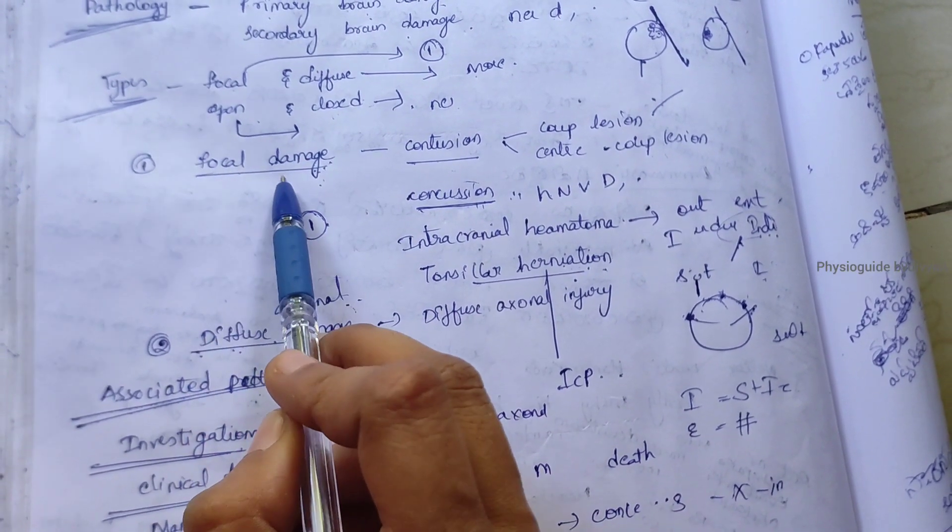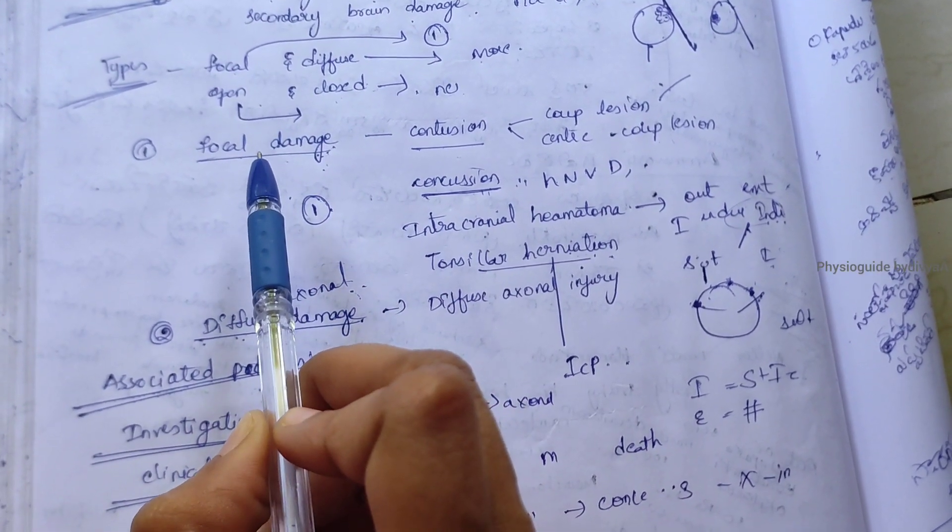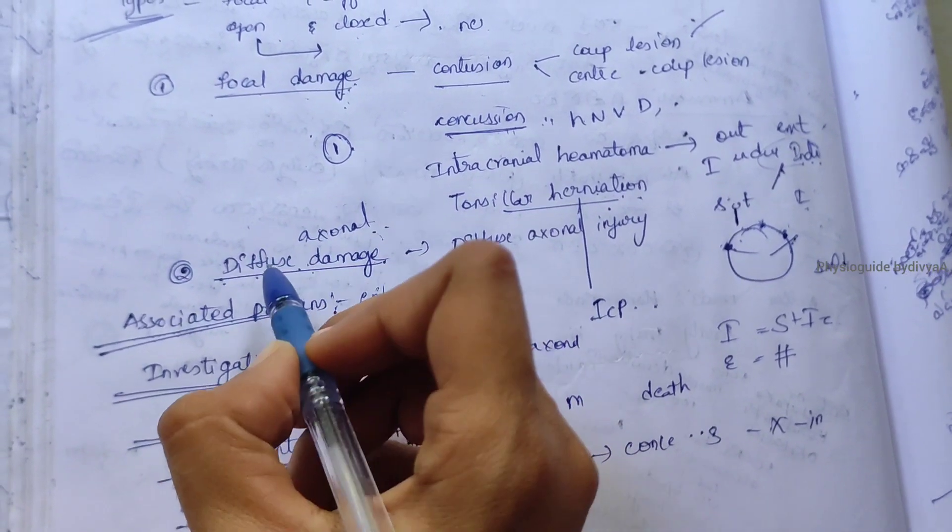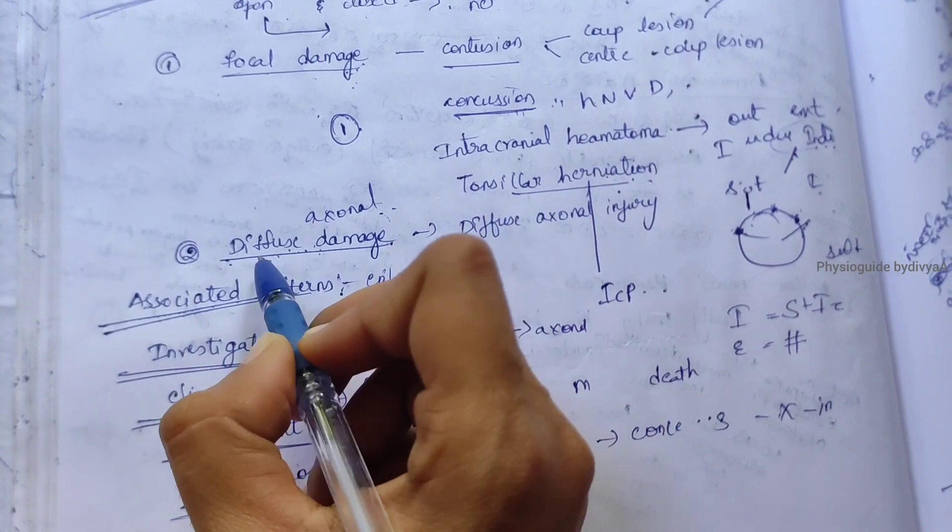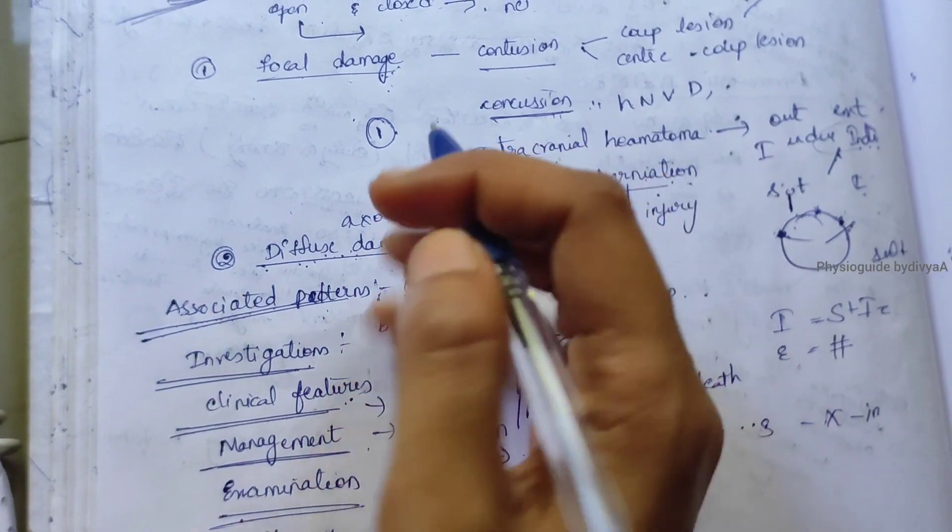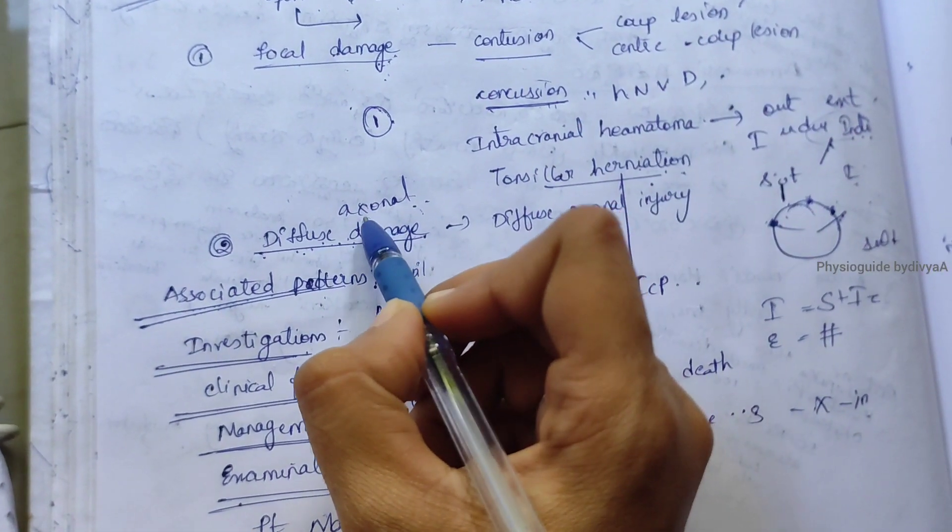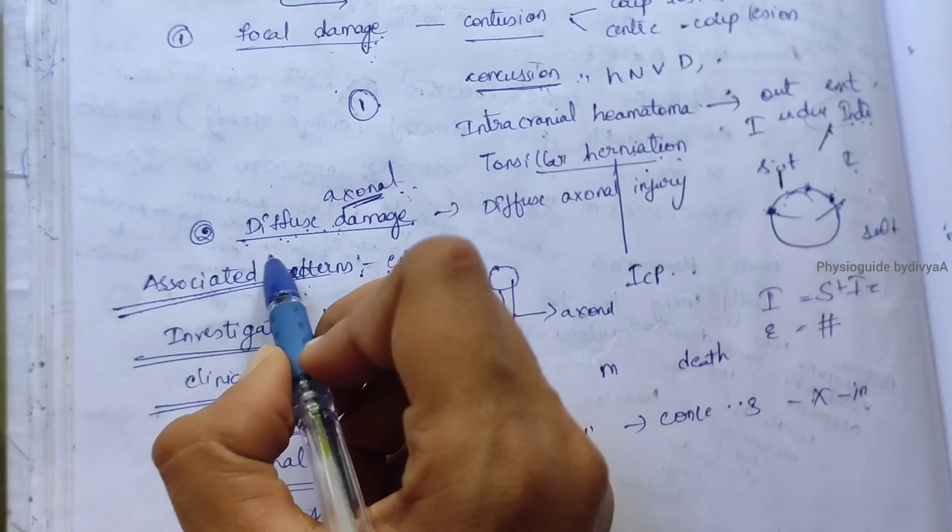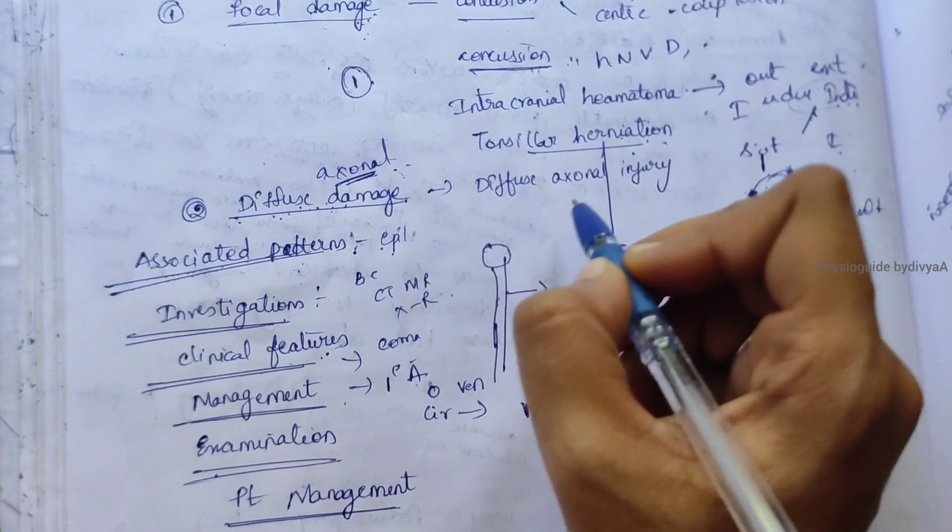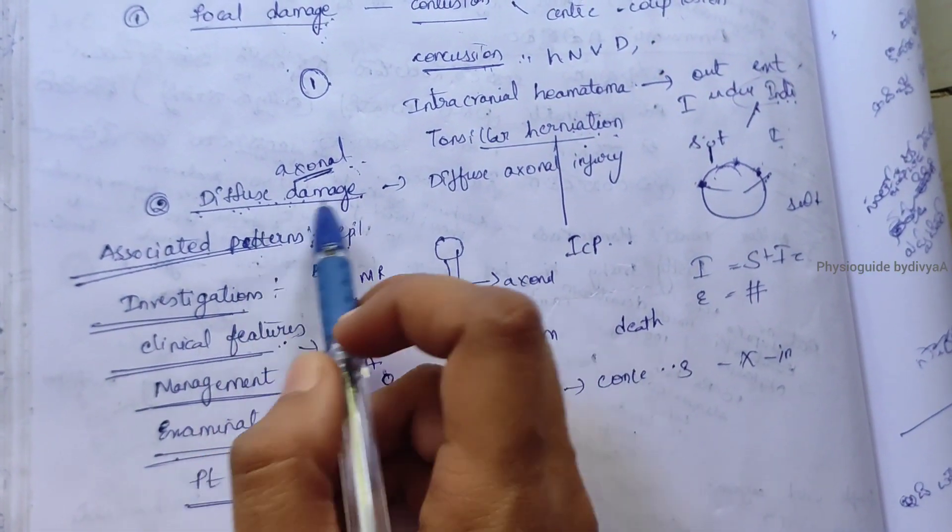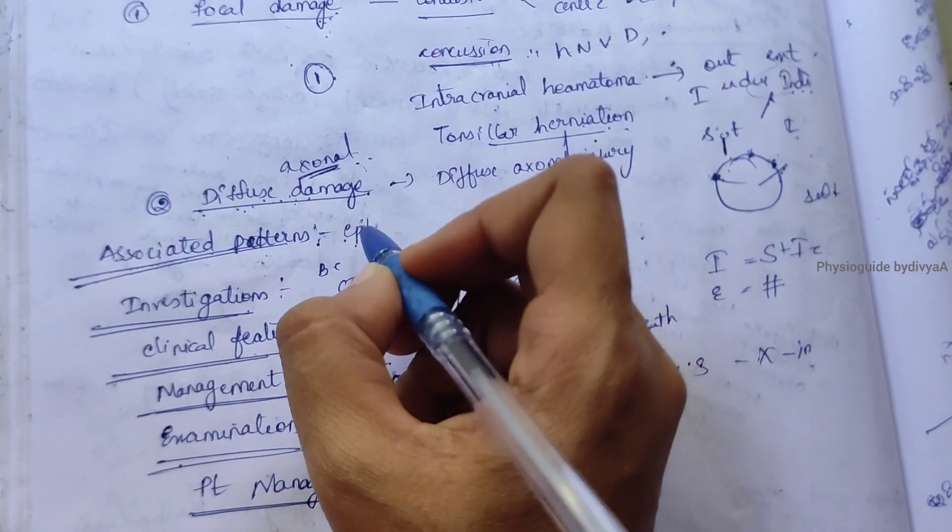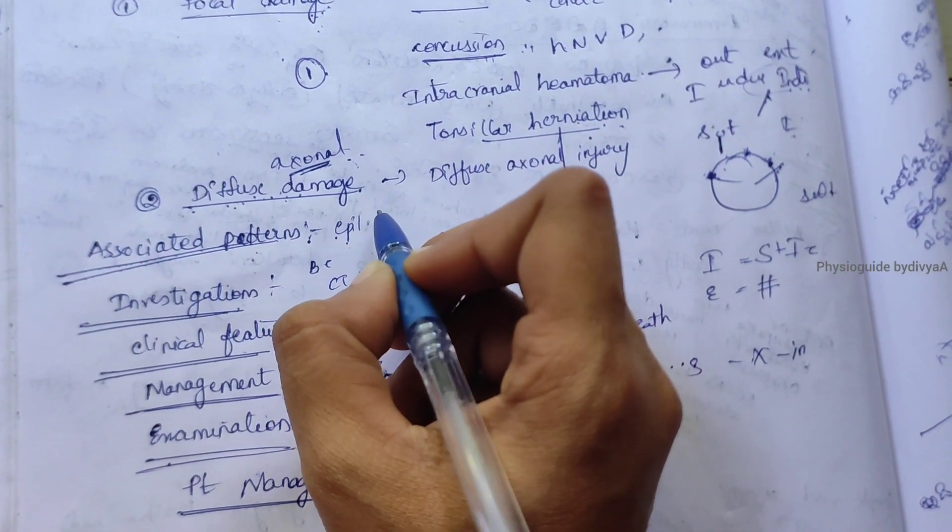Diffuse damage means more than one area is affected. This occurs with high-velocity injuries, causing diffuse axonal damage mainly by shearing force, which immediately damages the axons. Depending on severity, effects may range from mild coma to death. Associated problems include increased cranial pressure, anoxia, head injuries with epilepsy, and locked-in syndrome.